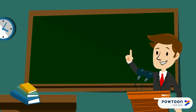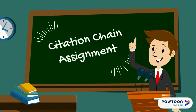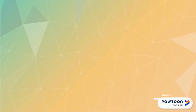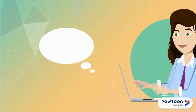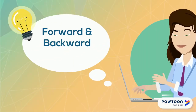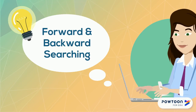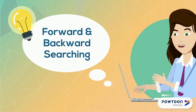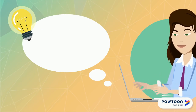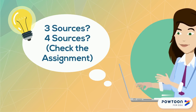But in some cases, you might be asked to deliberately create a citation chain as a special type of class assignment. If you've been given this kind of citation chaining assignment, you'll want to use forward and backward citation search strategies to find a chain consisting of three or four sources, however many your assignment requires.